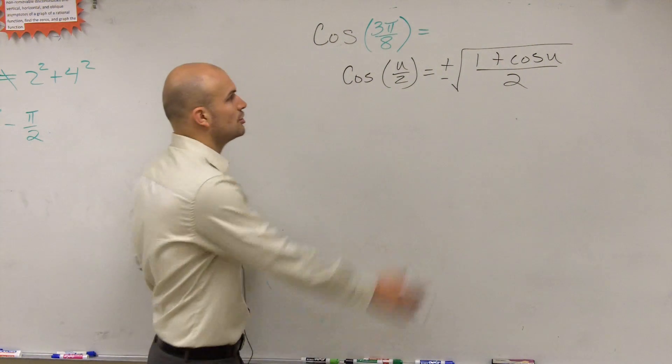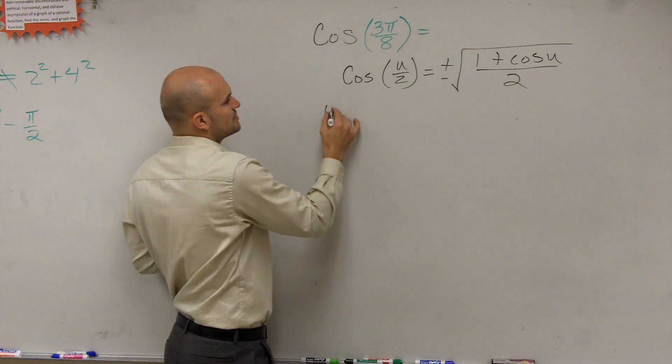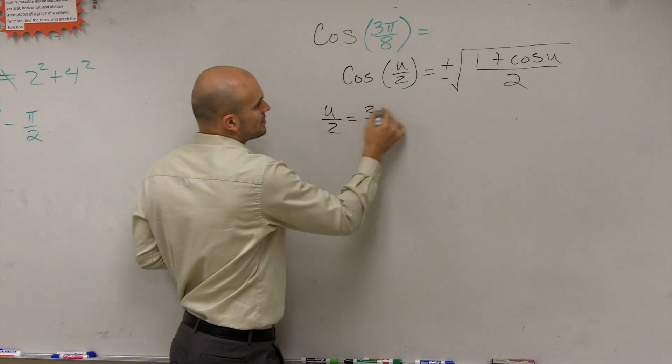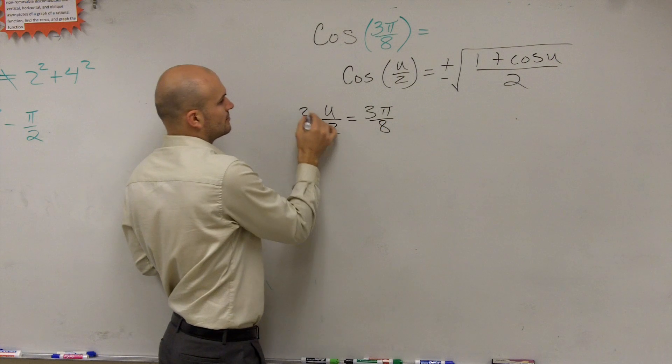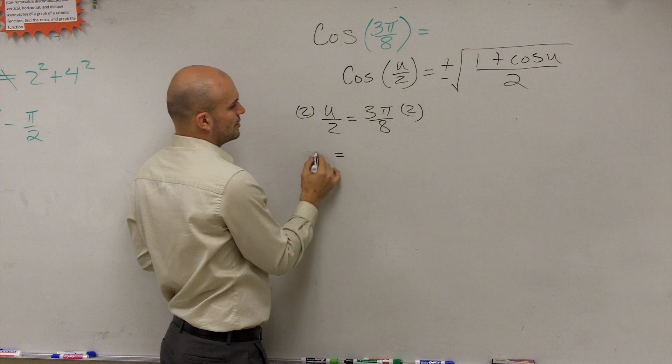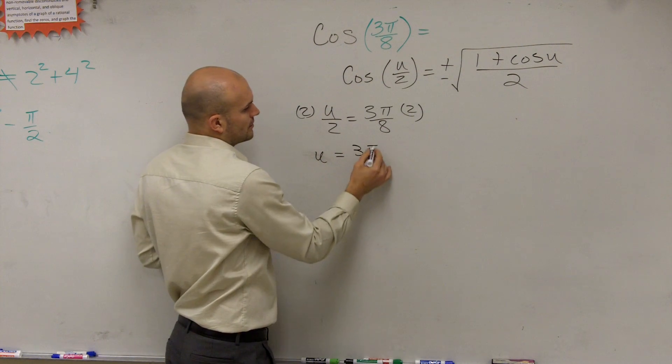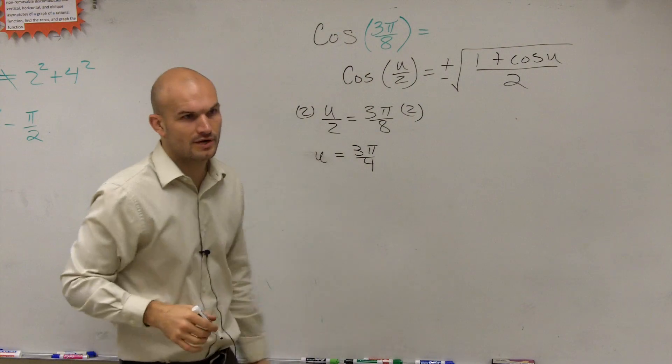So we again go back through. Well, if this is 3π/8, that means that's equal to u over 2. So you could say u over 2 equals 3π/8 multiplied by 2. u equals, that's 2, u equals 6π/8, which is 3π/4.